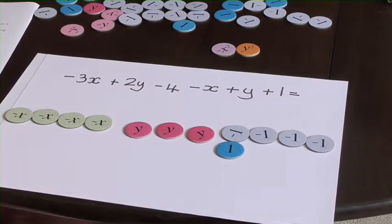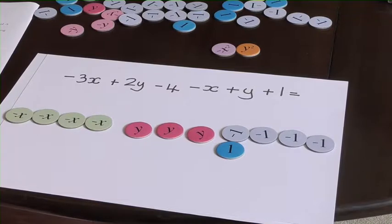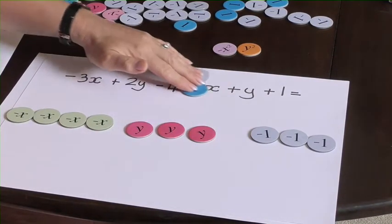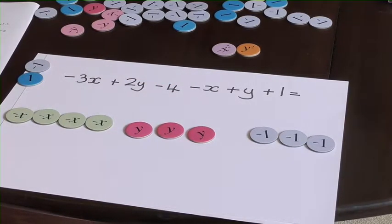The next stage is to have a look for the zero pairs, and actually this time you can see we've only got one zero pair. I'm going to take those away because it's zero, and then I'm going to count up what's left.